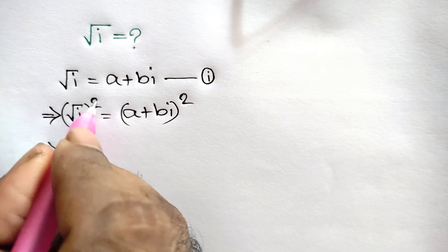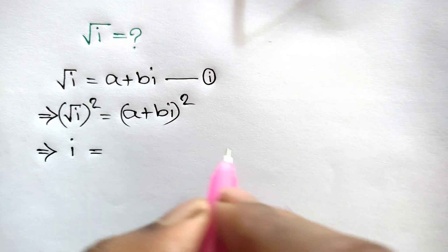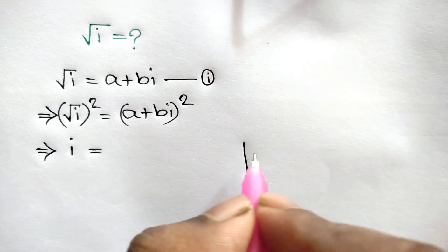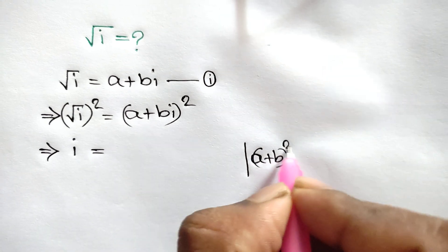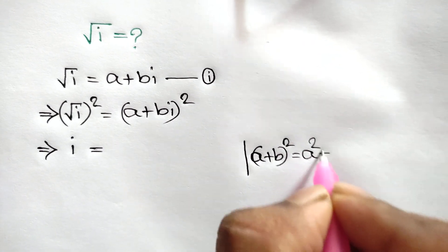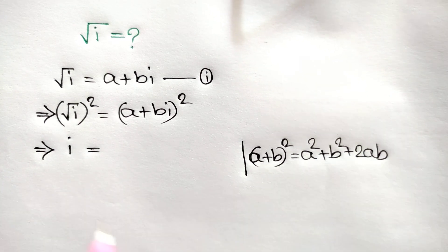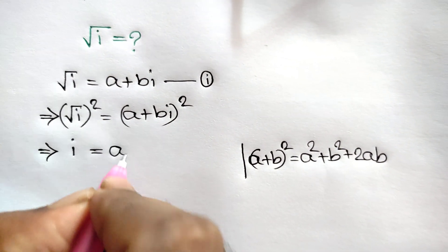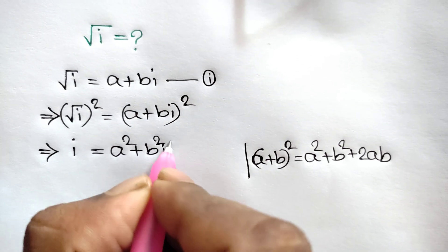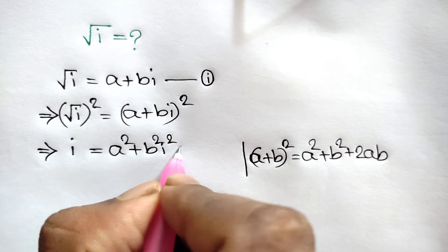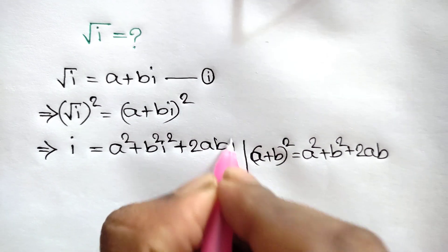The square cancels the square root, leaving i on the left. On the right, we apply the algebra rule: (a + b)² = a² + b² + 2ab. So we expand to get a² + b²·i² + 2ab·i.